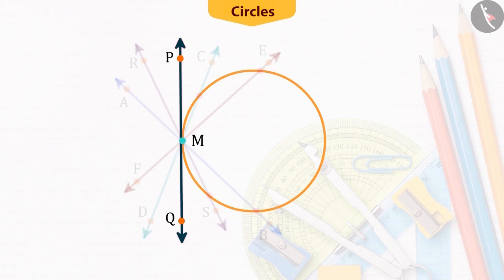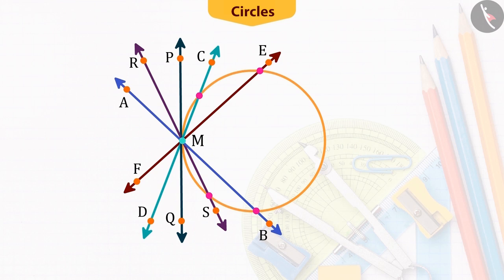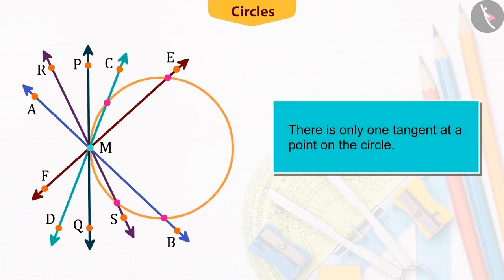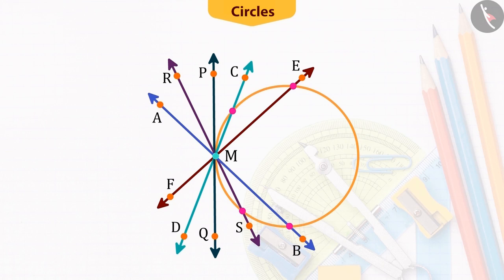But, the line PQ intersects the circle at only one point M. It is the tangent of the circle at point M. So, from this activity, we can conclude that there can be only one tangent passing through a point of a circle.